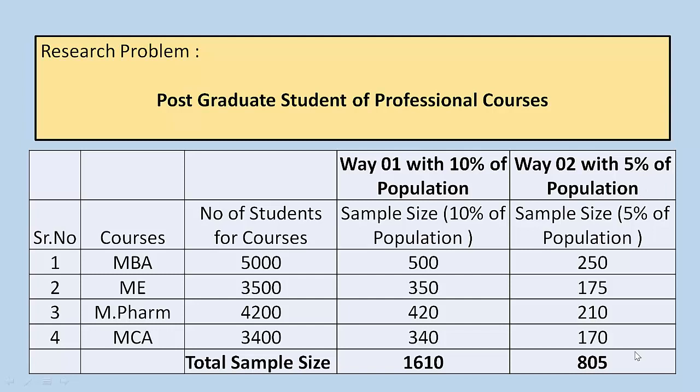In this way we can calculate the sample size by using this thumb rule — at least 5% up to 10% of the population. There are two options available: in the first way sample size is 1610, and in the second way sample size is 805. You can go with either option; even a sample size of 805, which is 5% of the total population, is acceptable.